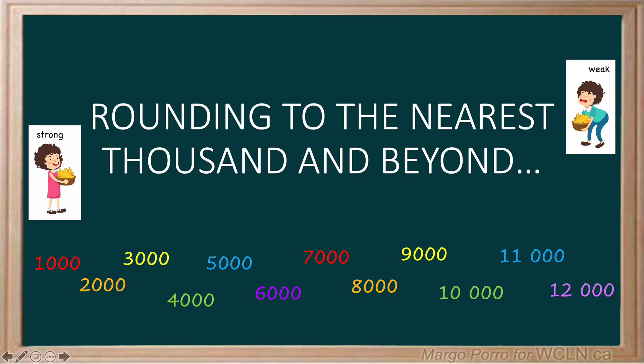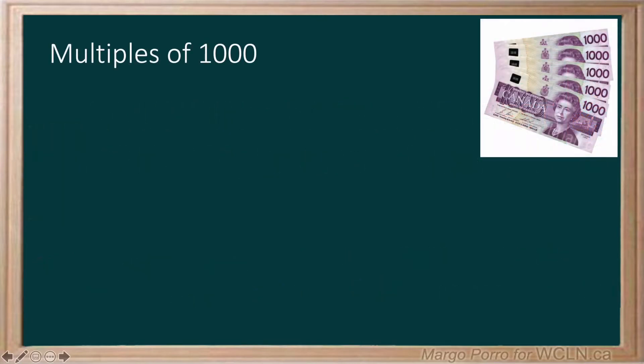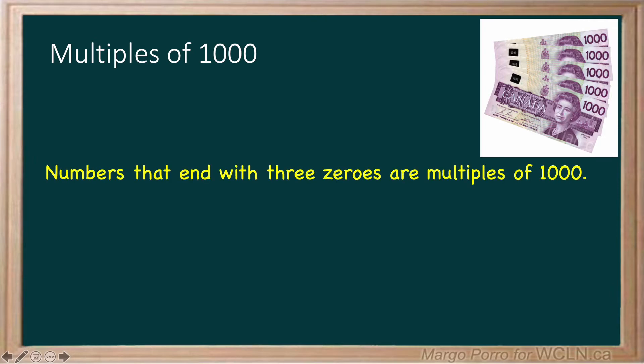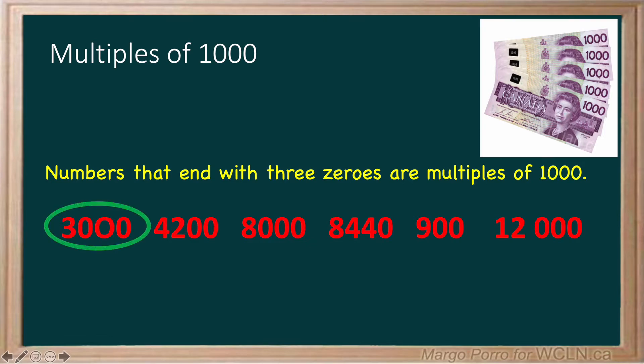Let's start with rounding to the nearest thousand. When rounding to the nearest thousand, the result is a multiple of one thousand. Numbers that end with three zeros are multiples of one thousand. You say them when you skip count by thousands. Which of these are multiples of one thousand? Look for which end in three zeros. These are three thousand, eight thousand, and twelve thousand.